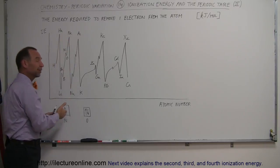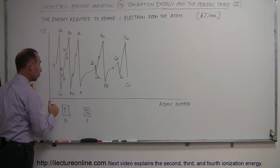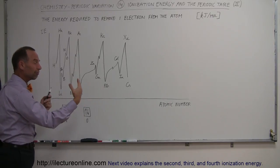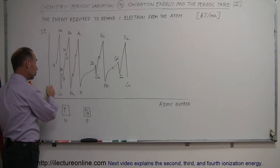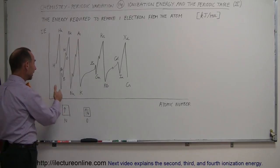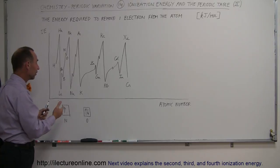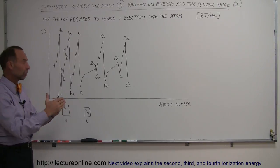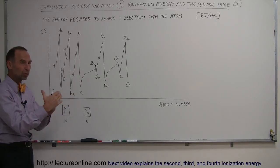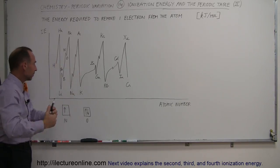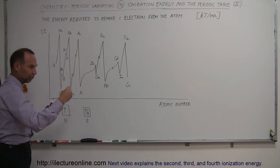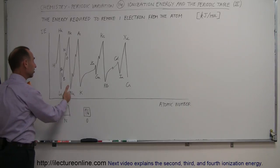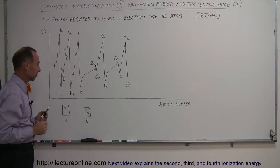Then we go to the third period, whose first element is sodium. We now have two energy levels that shield the last electron from the nucleus — the two in the innermost level and then the next eight in the second level. By the time we get to sodium with eleven total electrons, the ten innermost electrons shield the outermost one from the nucleus, making that atom very large. That last electron is far away from the nucleus, so the ionization energy drops dramatically because it's easy to remove.